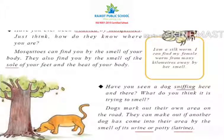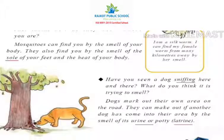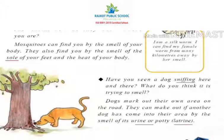Have you seen a dog sniffing here and there? Dogs mark out their own area on the road. They can make out if another dog has come into their area by the smell of its urine. That is how they identify other dogs — by smell.